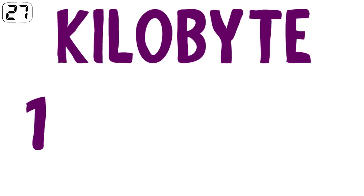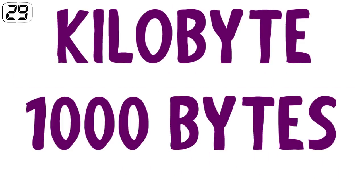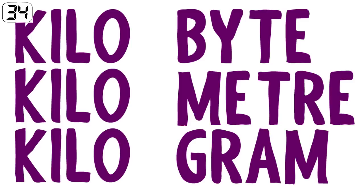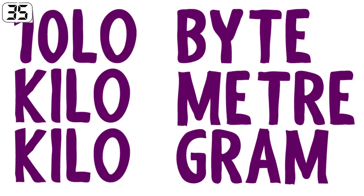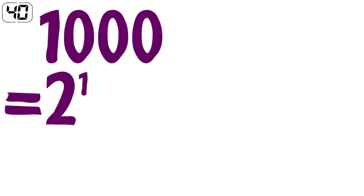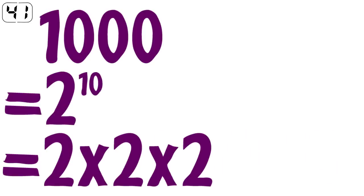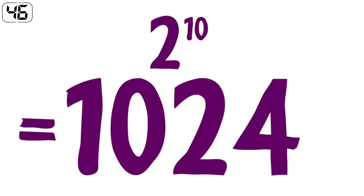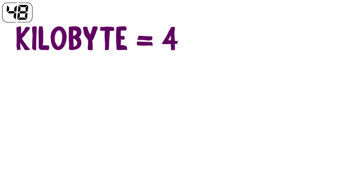A kilobyte is often referred to as a thousand bytes. In fact, kilo is a base 10 prefix that we use in binary to represent approximately 1,000. The binary equivalent of 1,000 is 2 to the power of 10, which equals 1,024. So a kilobyte is actually 1,024 bytes.